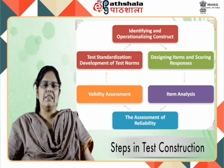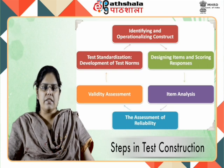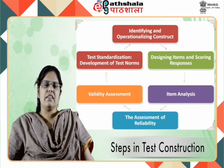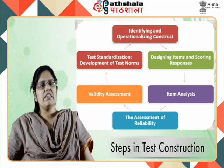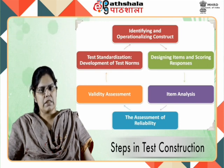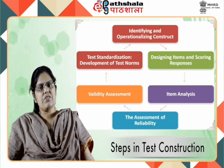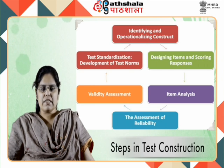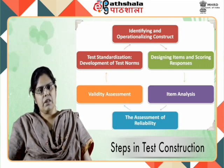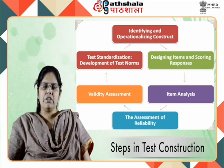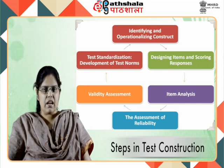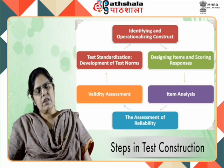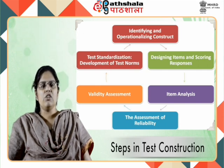The fourth step is the assessment of reliability. In this step, the test is put to reliability assessment. Reliability of a test is a criterion of test quality relating to the accuracy of psychological measurements. Test reliability has two distinct but related meanings: internal consistency and stability over time. There are five methods to measure reliability: test-retest method, method of parallel form, split-half reliability, method of rational equivalence, and Cronbach's alpha.